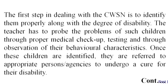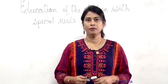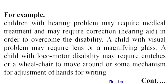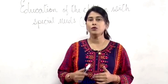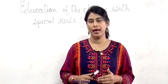The first step in dealing with the CWSN is to identify them properly along with the degree of disability. The teacher has to probe the problem of such children through proper medical check-up, testing and through observation of their behavioral characteristics. Once these children are identified, they are referred to appropriate persons or agencies to undergo a cure for their disability. For example, children with hearing problems may require medical treatment and correction like a hearing aid. A child with visual problems may require lens or a magnifying glass. A child with locomotor disability may require crutches or a wheelchair to move around, or some mechanism for adjustment of hands for writing.